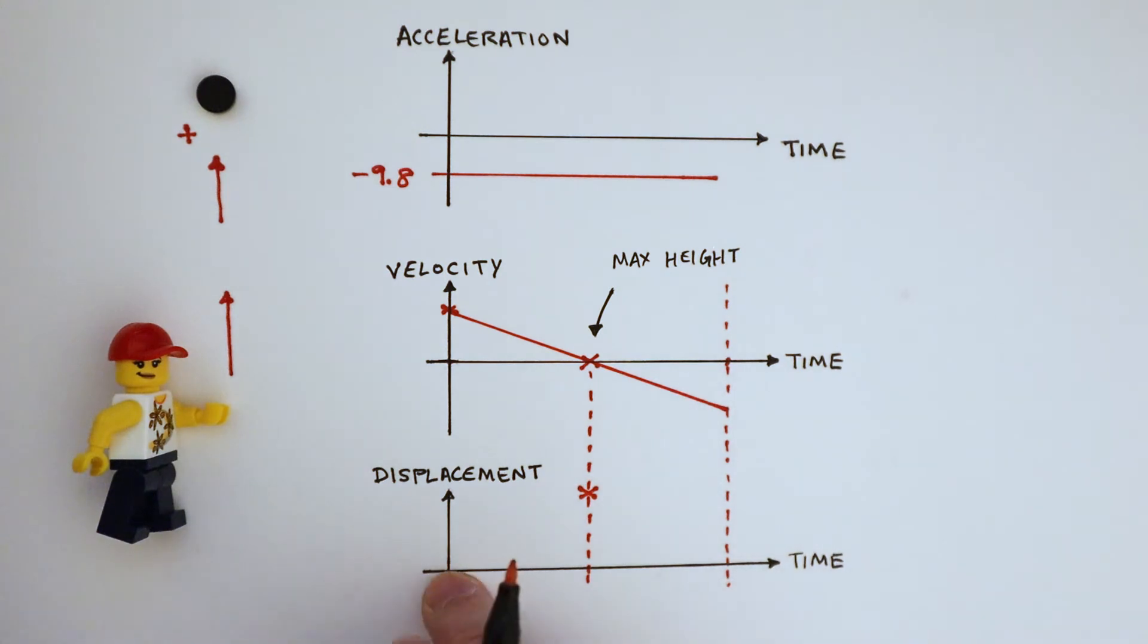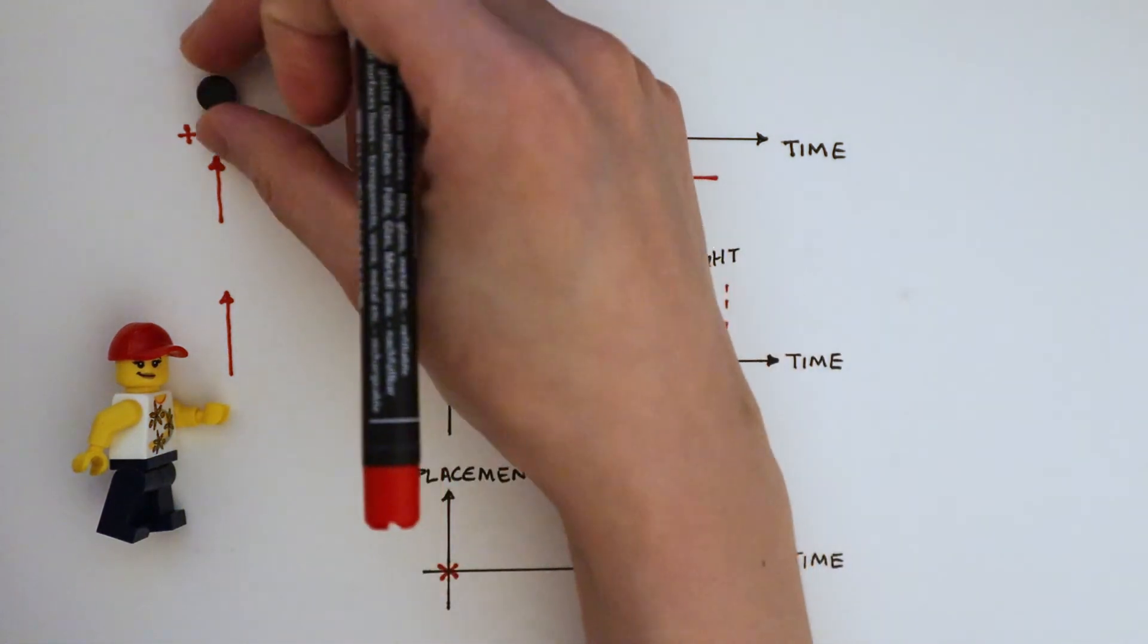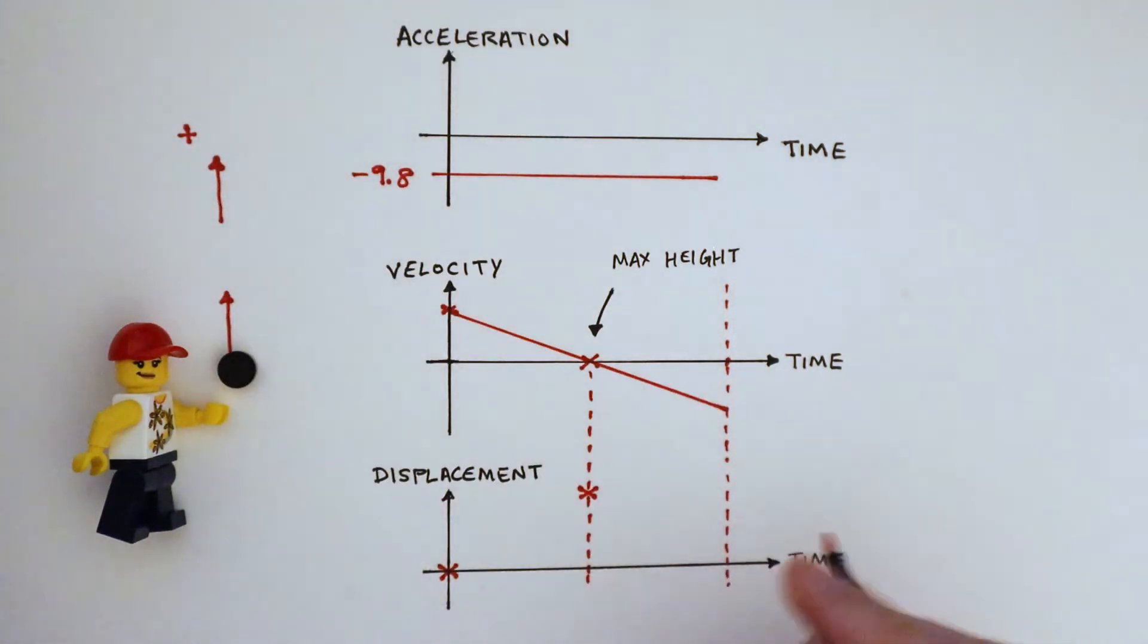At the start when the ball is still in my hand, displacement is just zero. At the end of the flight, the ball comes back to my hand, so its displacement is zero.